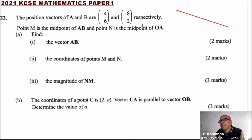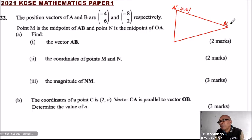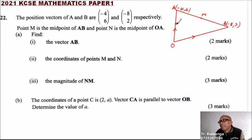On the sketch, we have vector AB. This is point A, this is the origin O, and this is point B. The coordinates of A are (-4, 6) from the position vector, and the coordinates of B are (-8, 2). M is the midpoint of AB, and N is the midpoint of OA.